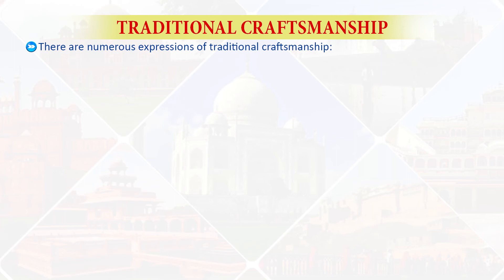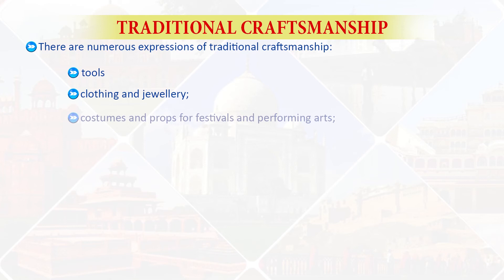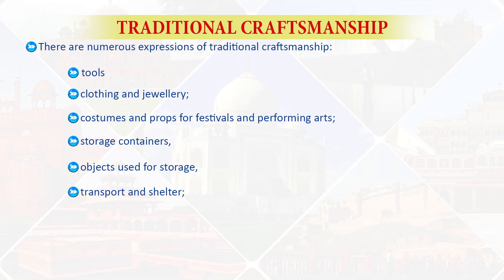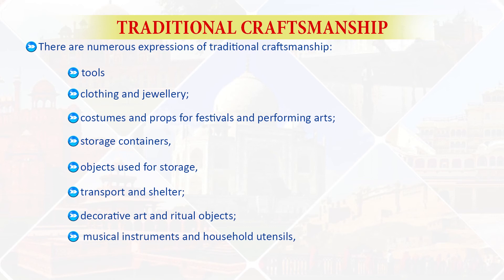The fifth category of living culture is traditional craftsmanship. Traditional craftsmanship is perhaps the most tangible manifestation of intangible cultural heritage. The skills and knowledge involved in craftsmanship are important, and artisans need encouragement and support to continue to produce craft and to pass their skills and knowledge on to others, particularly within their own communities. There are numerous expressions of traditional craftsmanship: tools, clothing and jewelry, costumes and props for festivals and performing arts, storage containers, objects used for storage, transport and shelter, decorative art and ritual objects, musical instruments, household utensils and toys for both amusement and education.